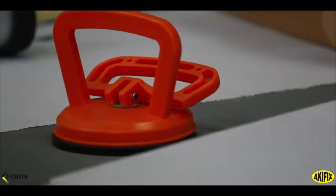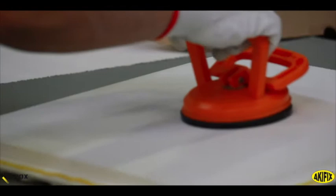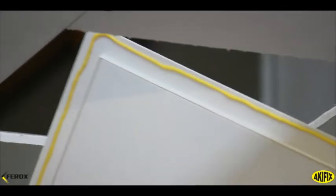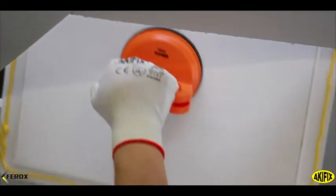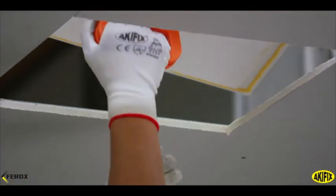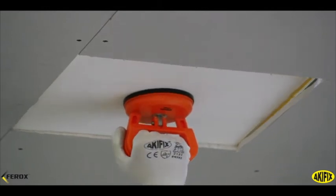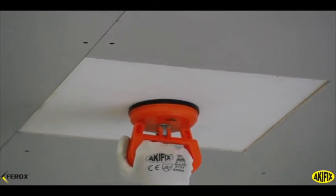Use the appropriate suction cup to raise the trapdoor, taking care to position it in the center of the door. Insert the inspection panel in the hole previously created. With the head of the suction cup, perform a slight downward pressure for about 30 seconds.